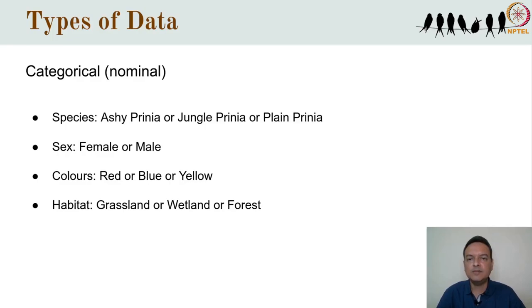For example, this bird might be an Ashy Prinia, and the other bird a Jungle Prinia, and the third one a Plain Prinia, or this Ashy Prinia might be male and the other female. We can also think of colors as categories, like red or blue or yellow. Another common category is habitat, like grassland vs. wetland vs. forest, and so on.